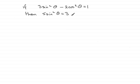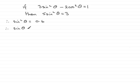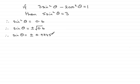We divide both sides by 5, which gives sine squared theta equals 3 fifths, or as a decimal, 0.6. Next we take the square root of both sides, so sine theta equals plus or minus the square root of 0.6. On a calculator you'll find that gives sine theta equals plus or minus 0.77459.